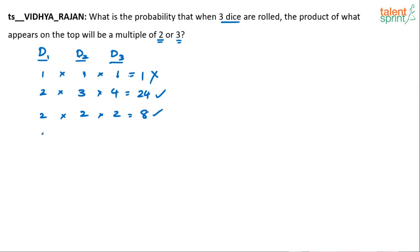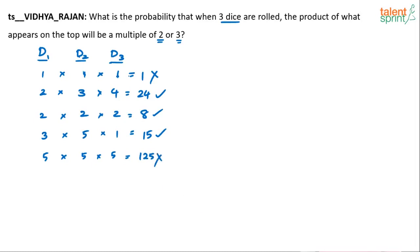Let's say if you get 3, 5, and 1. So 3 into 5 into 1 is 15. This is a multiple of 3. Suppose we get 5, 5, 5 — 5 into 5 into 5 is 125. 125 is neither a multiple of 2 nor a multiple of 3, so this is ruled out. We have to find all such cases where the product is either a multiple of 2 or a multiple of 3.